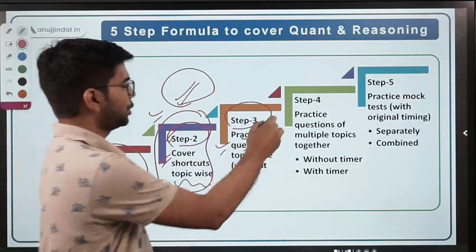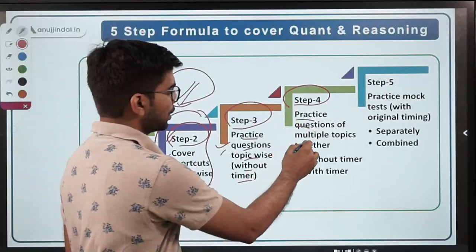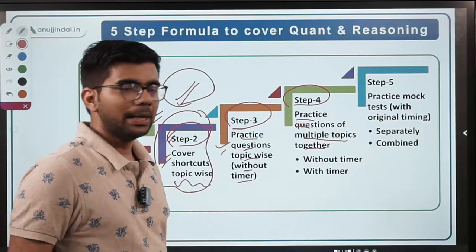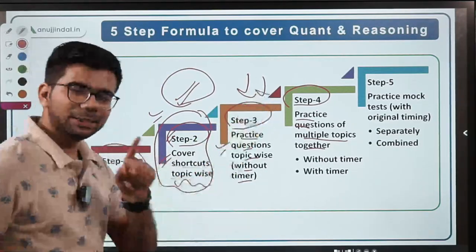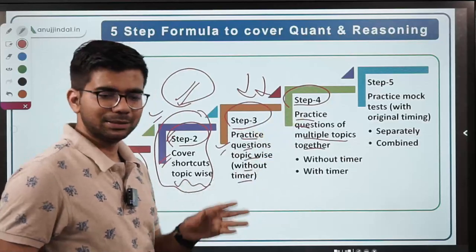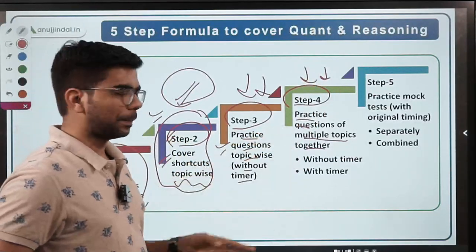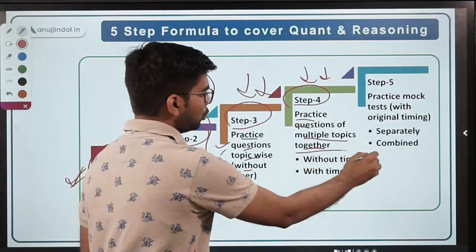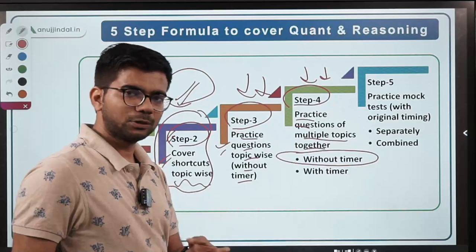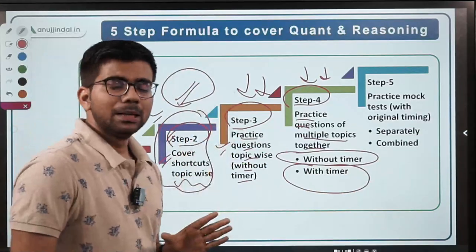Once done with step three, comes step four: practice questions of multiple topics together — mix questions from multiple topics. In step three your brain works in one direction for a single topic, but mixing questions makes it more challenging. First do the mixed questions without a timer, and once you have understood the questions and shortcuts, start setting a timer. You have to move to step four quickly, as we have only about two months left for the examination.